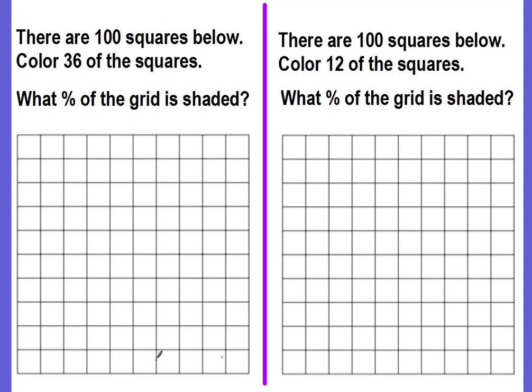But here we have a 10 by 10 grid, which means there are 100 squares. And they want us to color 36 of the squares. So you can use your pencil or a pen, or if you have a colored pencil, you can use that. So it can be any 36 squares that you want. I'm just going to make it easy. And each row is 10 squares. So I'm going to shade three rows to make 30.